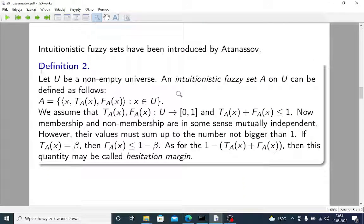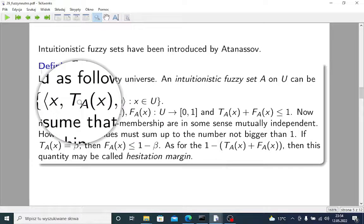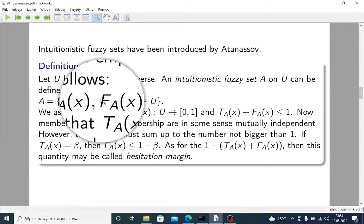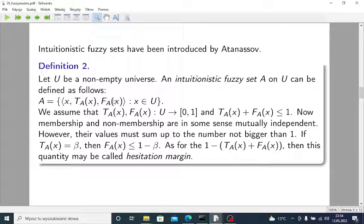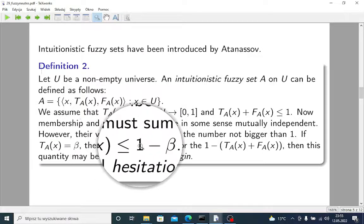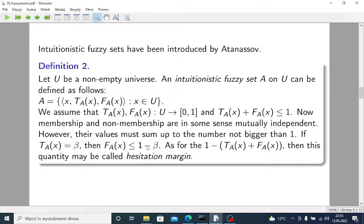Then was Atanasoff who introduced intuitionistic fuzzy sets, where, as you can see here, we have two different functions, truth and falsity. So membership and non-membership are mutually independent. But their values must sum up to the number not bigger than 1. So if we have beta as our membership, then our non-membership must be not bigger than 1 minus beta.